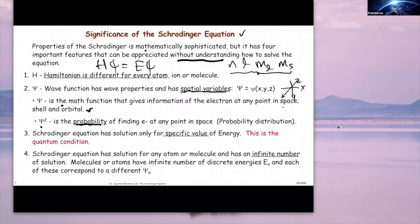The Schrödinger equation has solutions only for specific values — this is called the quantum condition. That's why I drew a model of the atom with these shells: electrons can only be found in these shells, they can't be found in between. The Schrödinger equation has solutions for any atom or molecule and has an infinite number of solutions. Atoms have infinite numbers of discrete energies, and each corresponds to a different wave function.